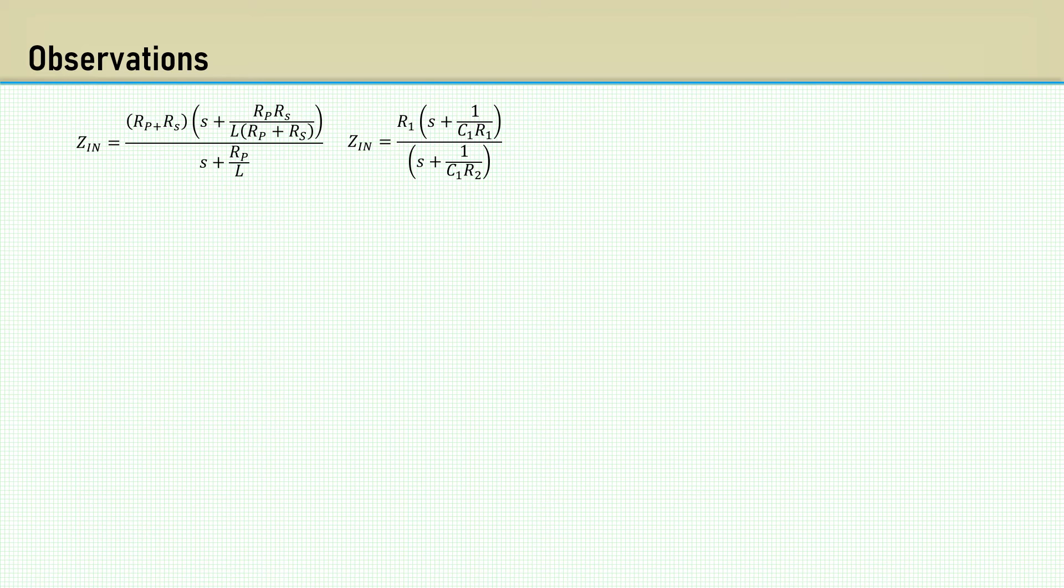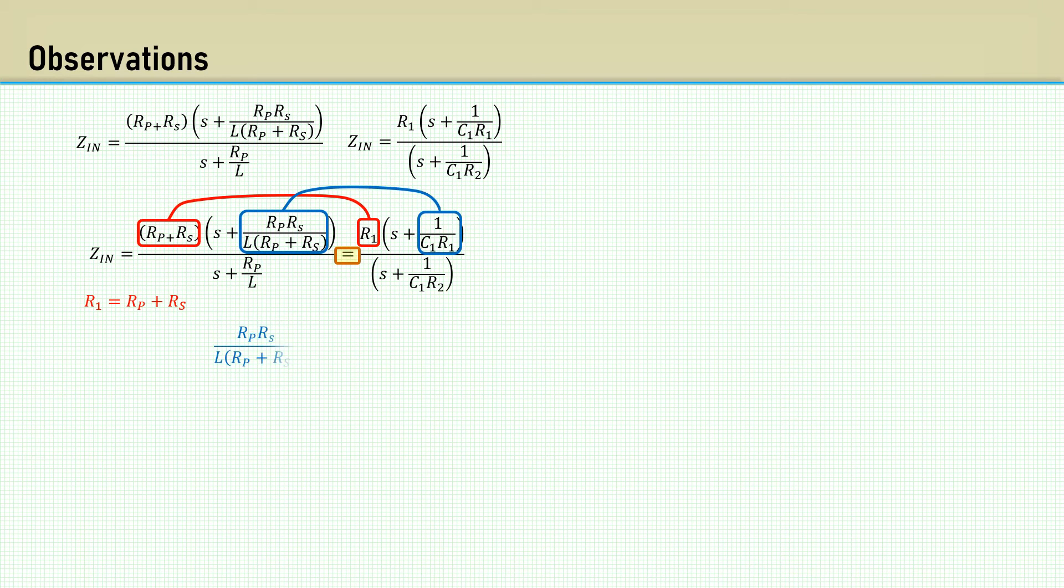Here's the formula juxtaposed with the Zn formula for the passive model. We will now set the passive model equation equal to the active model equation. Since they are both in the same form, we can make some observations. We can see out front of the numerators, Rp plus Rs is the same as R1 in red. These terms in blue added to the S in the numerator can be equated. We can then substitute Rp plus Rs for R1. Rearranging to solve for C1 allows us to cancel the terms Rp plus Rs. And we are left with C1 equals L over Rp plus Rs.